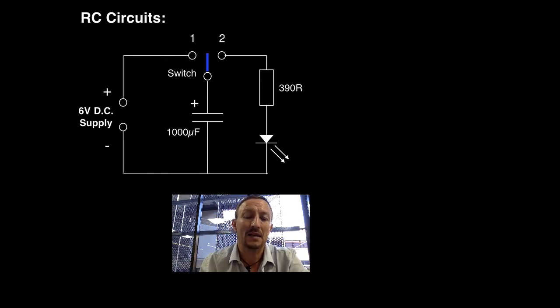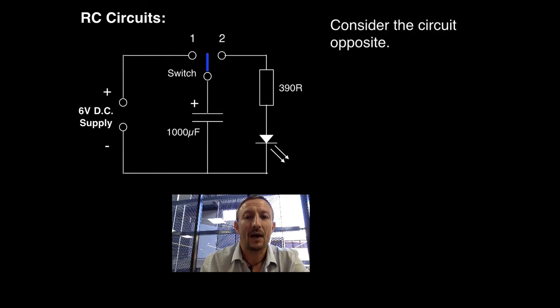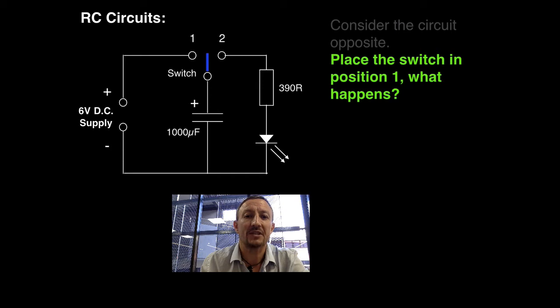Now the LED is basically a light emitting diode. You can see the switch there can be positioned between 1 and 2. At the moment everything is off. However, what happens if we place the switch into position 1 as we can see here?